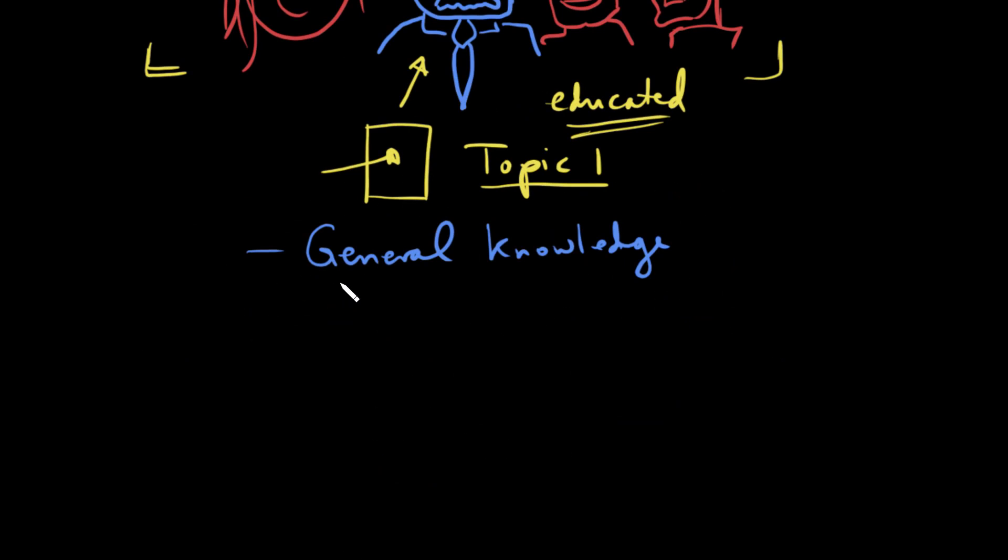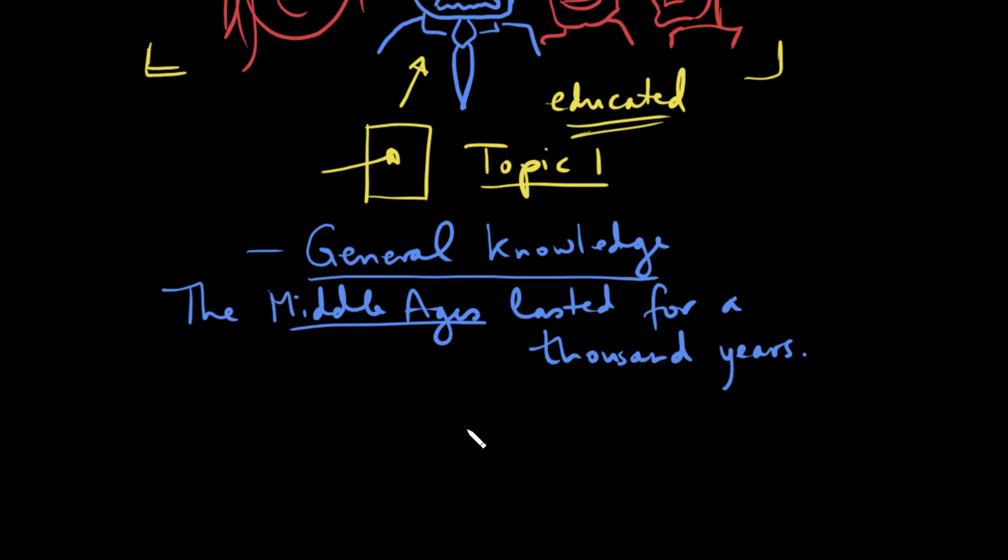So what then might be classified as general knowledge? Well, here's an example. Let's say you wrote something like the Middle Ages lasted for a thousand years. You've learned this, and you want to share it. I would say that most people who have some passing familiarity with the Middle Ages would know this information already. They're not going to find this interesting, and it really doesn't need to be mentioned.